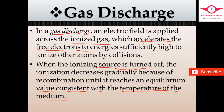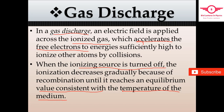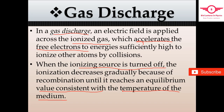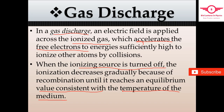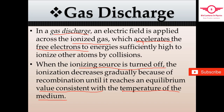Plasma existence depends on meeting the plasma criteria — we can check whether it is applicable or not. So these are basically the two main types used in the laboratory to produce plasma: gas discharge and photo ionization.